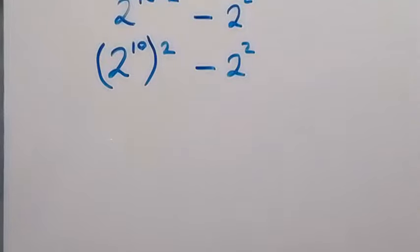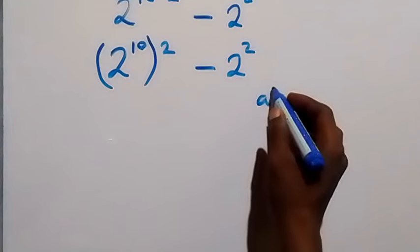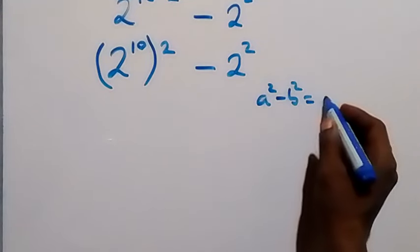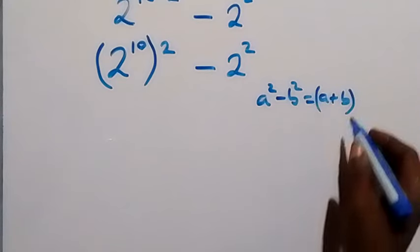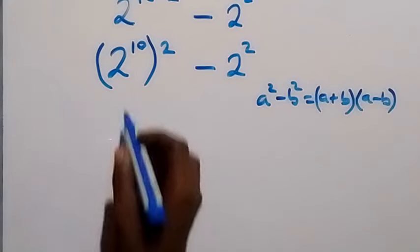In the next step, this follows the difference of two squares - that is, when we have a squared minus b squared, this gives us a plus b times a minus b. So when we apply that here: